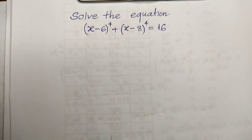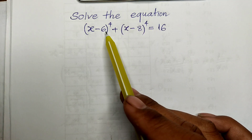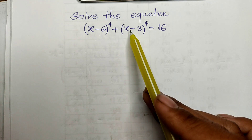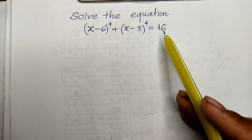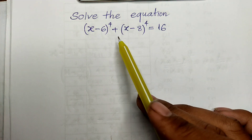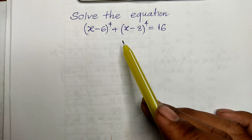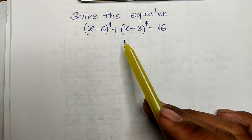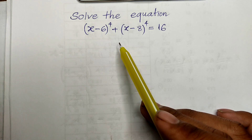Hello everyone, welcome to my YouTube channel. Today I have one exercise on paper. The equation that we have is: (h minus 6) to the power 4, plus (h minus 8) to the power 4, equals 16. Do you know how to solve this? If you know it, please try it first, then come back to watch my video to verify your solution. Please don't forget to like and subscribe to my channel for more exciting videos. Let's go to the solution together.